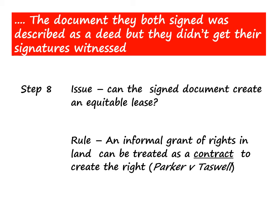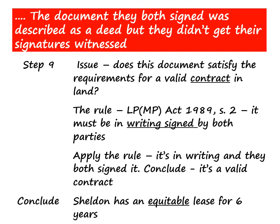We now need to see whether this signed document can create an equitable lease. The rule is that an informal grant of rights in land can be treated as a contract to create the right — as seen in Parker v Taswell. We check whether the document satisfies the requirements for a valid contract under section 2 of the 1989 Act, which says it must be in writing and signed by both parties. The document is in writing and they both signed it, so it is a valid contract. Therefore, the final conclusion is that Sheldon has an equitable lease for six years.